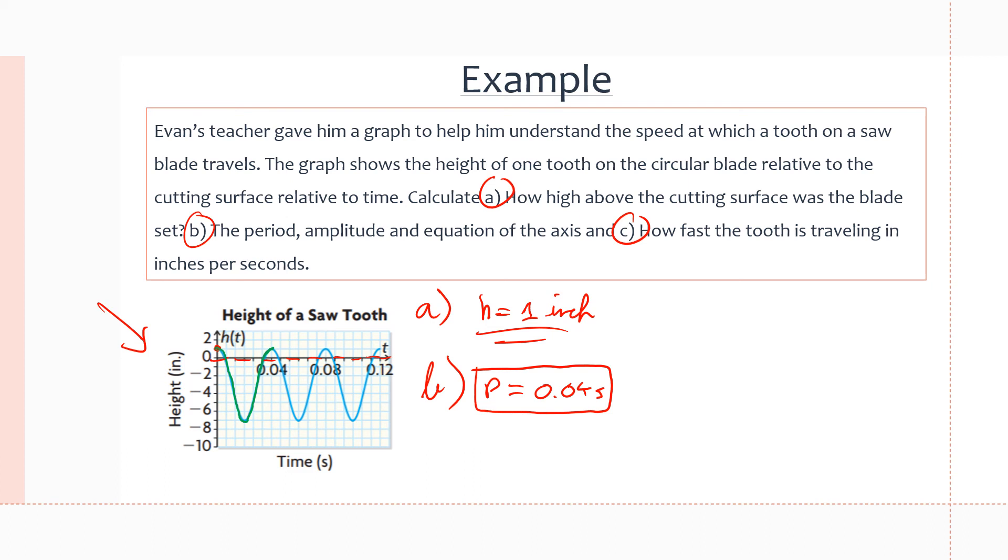Next, our amplitude, which is the distance between the max and the min. We'll do max, which is 1, minus the min, which is negative 7, divided by 2 to get half the distance between them. So 1 minus minus 7 is 1 plus 7, which is 8, divided by 2, which is 4. Therefore, A equals 4. Then we want to calculate the equation of axis, which is simply the max plus the min divided by 2. So 1 minus 7 is negative 6, divided by 2 is negative 3. Therefore, the equation of axis is y equals negative 3.